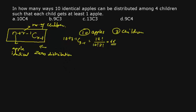This formula applies when zero distribution is allowed — that is, a child can receive zero apples or all the apples. For questions where each child must get at least one apple, we need to tweak the problem before applying the formula. Rather than devising a new formula, we manage the minimum condition directly: since every child must get at least one apple, we first ensure that minimum is met.